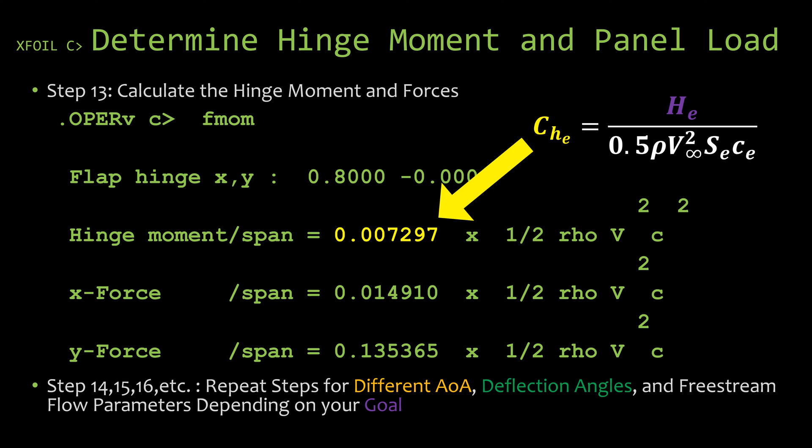If we were just trying to find the maximum hinge moment and maximum panel loading, we would just do a single run at the maximum condition. However, if we're trying to characterize some of these parameters, we might need to do sweeps at different angle of attacks or different deflection angles. So we would just go back and repeat some of these steps.